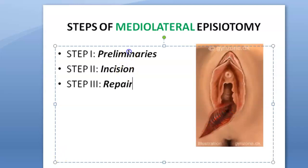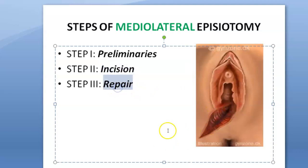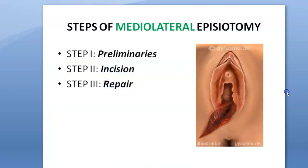They have divided it as preliminaries, where you will give povidone iodine — you will paint it and then give some local anesthesia. Then you will do the incision. How to do the incision? What are the structures that are cut? And finally, how will you suture it? That's what we have to look at.